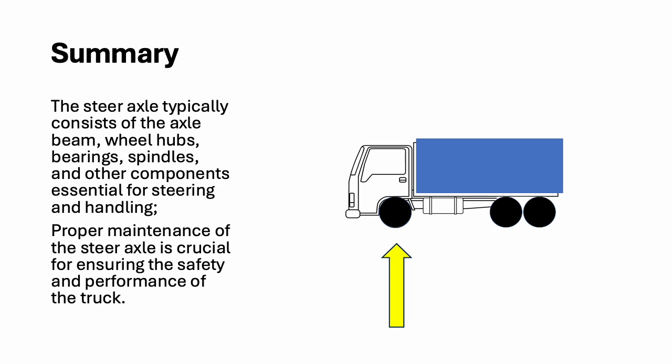The steer axle typically consists of the axle beam, wheel hubs, bearings, spindles, and other components essential for steering and handling.